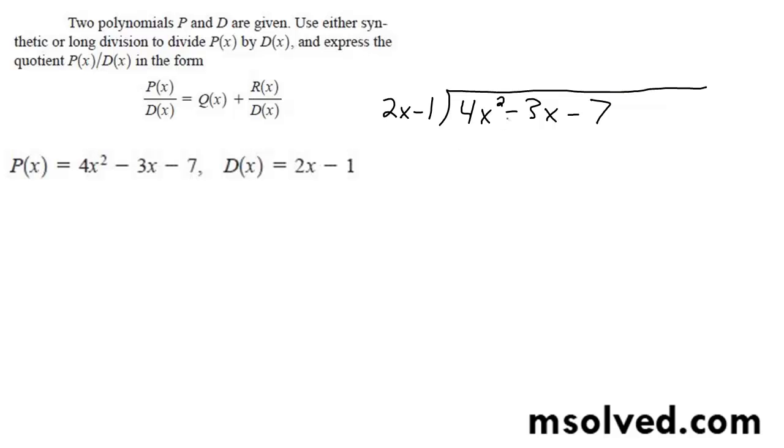I'm going to solve this problem using long division. So 4x squared minus 3x minus 7 divided by 2x minus 1.